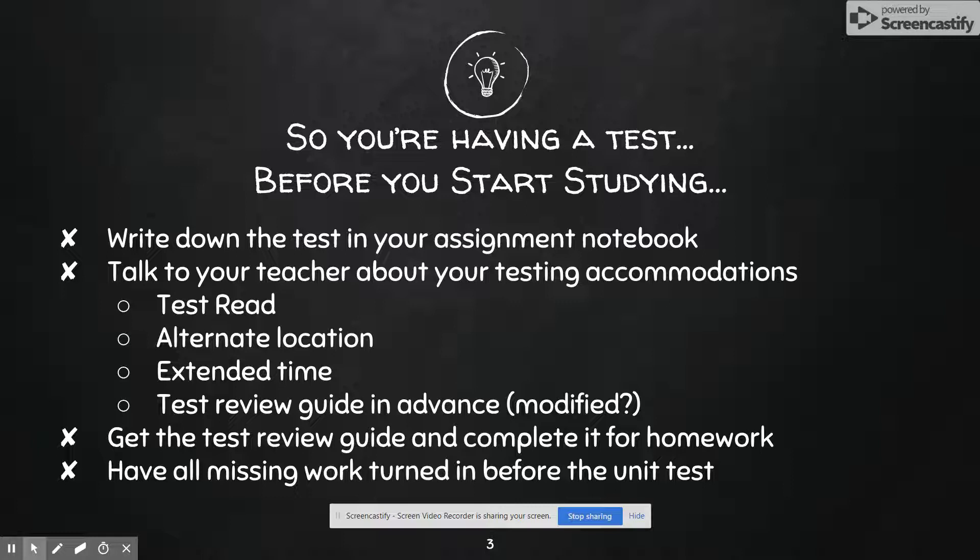If you get a test review guide, complete it for homework, and I would complete it sooner than later. And the last one is have all missing work turned in before the unit test. It doesn't maybe necessarily help you specifically with that test, but some teachers do have the rule that if you don't have all your assignments turned in by the time you take that test, they turn to zero. So if there was a retake or remake policy for homework, it's all due by the unit test. So you want to make sure that you have everything done leading up to that test.